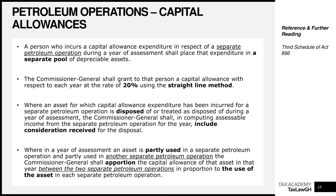A person who incurs capital allowance expenditure in respect of a separate petroleum operation shall, during the year of assessment, place that expenditure in a separate pool of depreciable assets. The Commissioner General shall grant to that person a capital allowance with respect to each year at the rate of 20% using the straight line method.